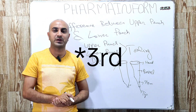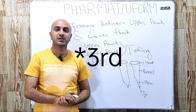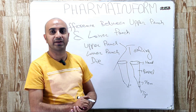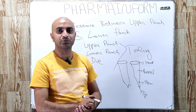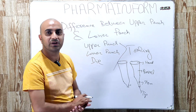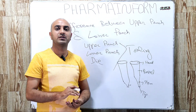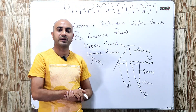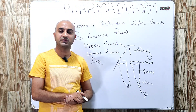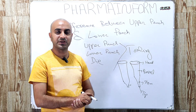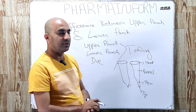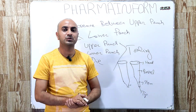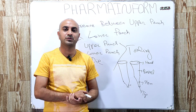The third difference is punch penetration. The upper punch penetration inside the die is used to control tablet capping, but the lower punch penetration is used for the ejection of the tablet.